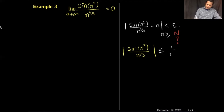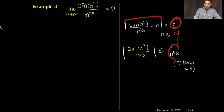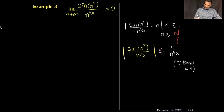Taking the left-hand side |sin(n²)/n^(1/3)|, this is strictly less than or equal to 1/n^(1/3), because sin(n²) is always bounded by 1. This is the famous inequality: sine and cosine are always bounded by 1 in absolute value. So if I can make 1/n^(1/3) < ε, I'm done.